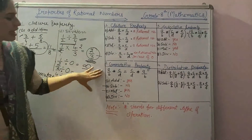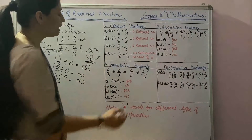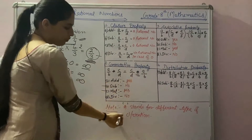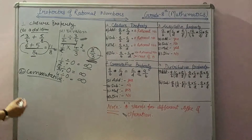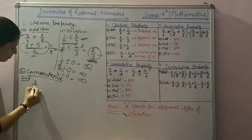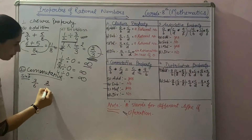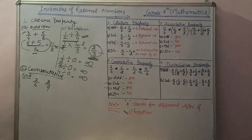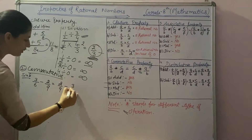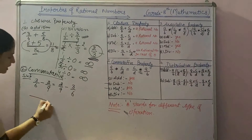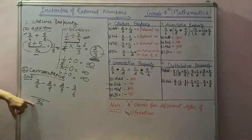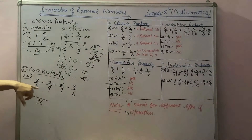Let's discuss commutative property. Commutative property states that A by B star C by D is equal to C by D star A by B, where star stands for different operations. Let's take two rational numbers, 3 by 6 and 2 by 9, and subtract them in different orders. What is the LCM of 6 and 9? It is 36, because 36 is the least common multiple of 6 and 9.